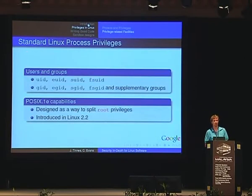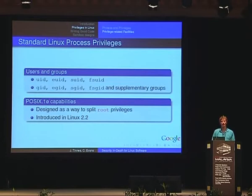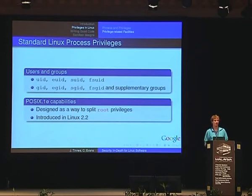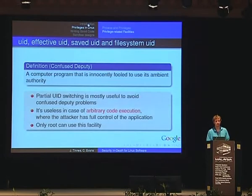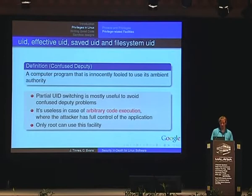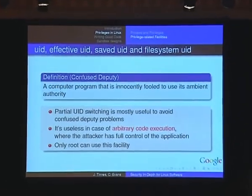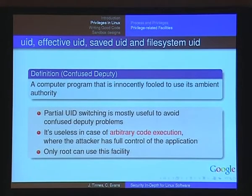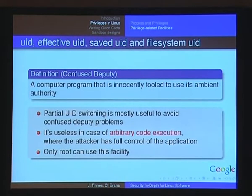In Linux we have a few privilege-related facilities. The most well-known is users and groups. You have many user IDs: a general UID, an effective UID, a saved UID, a filesystem UID, and the same for GIDs. Since Linux 2.2 you also have POSIX capabilities, designed as a way to split root privileges into many distinct privileges. A useful definition here is the confused deputy: a computer program that is innocently fooled into using its ambient authority. Many Linux privilege facilities have been designed to reduce confused deputy problems.